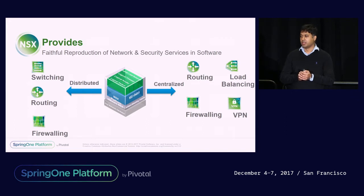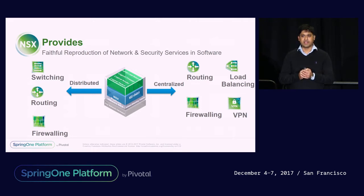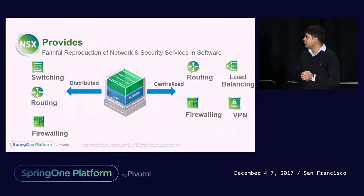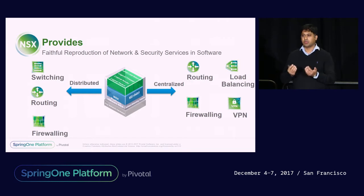For the first four years in market, NSX provided these networking and security services primarily only to vSphere-based environments. If you had ESXi hosts, you could run routing services on them. The goal was to distribute services as much as possible to the edge — instead of a centralized router and firewall, NSX-V made the ESXi hypervisor also a network appliance, with services running in a completely distributed fashion.